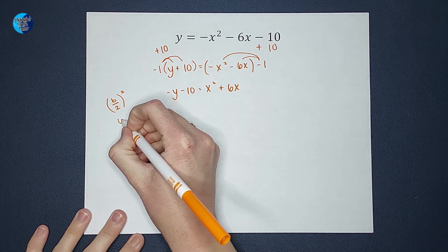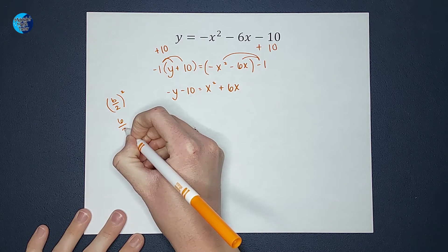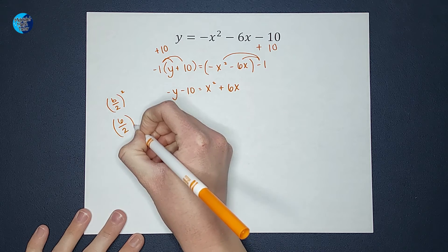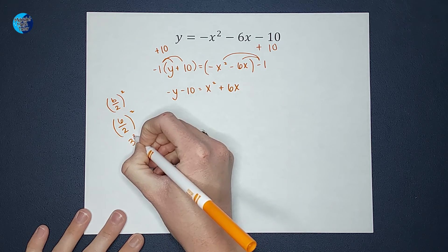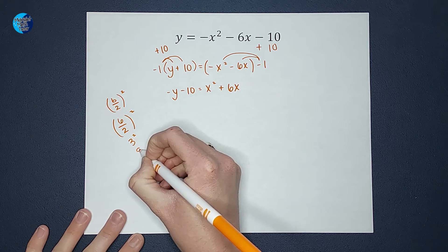So we're going to take 6, divide it by 2, and square it. 6 divided by 2 gives me 3, and 3 squared gives me 9.